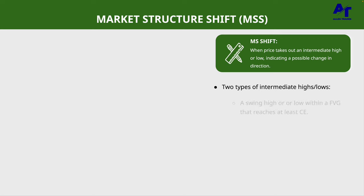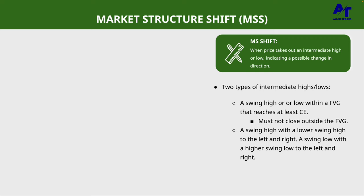There are two different types of intermediate highs and lows. The first one is a swing high or low within a fair value gap that reaches at least consequent encroachment. It must not close outside the fair value gap — if the bodies go outside the fair value gap, then this does not classify as an intermediate high or low.